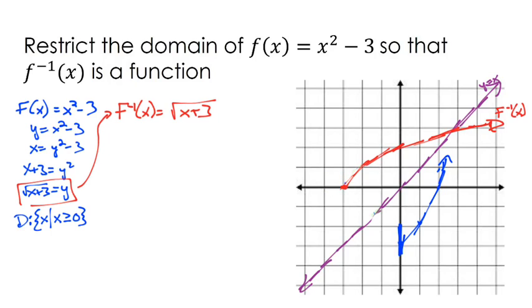Now what we have is our original function with a limited domain. And if I kept going on it, it would look like this. Then we have our inverse function. And you can see that now they are inverses. Now they are a reflection over y equals x. So sometimes you have to limit the domain of the original so that the inverse is a function.